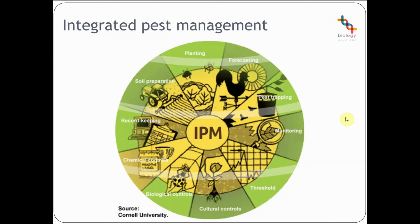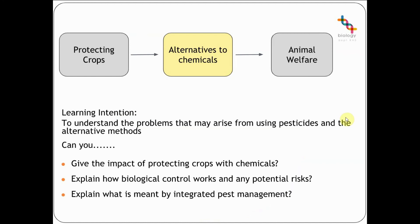So from that, you should be able to give the impacts of protecting crops with chemicals — that of bioaccumulation, biomagnification, and the potential producing of resistant pest populations. Biological control is using a natural enemy of our pests, which can come in the form of a predator, pathogen, or parasite, and there are risks where the biological control organism may escape into the wider environment. Finally, integrated pest management is the combination of chemical, biological, and cultural methods of pest control. Please get in touch if you have any questions — feel free to leave a comment, visit the website, or send an email.